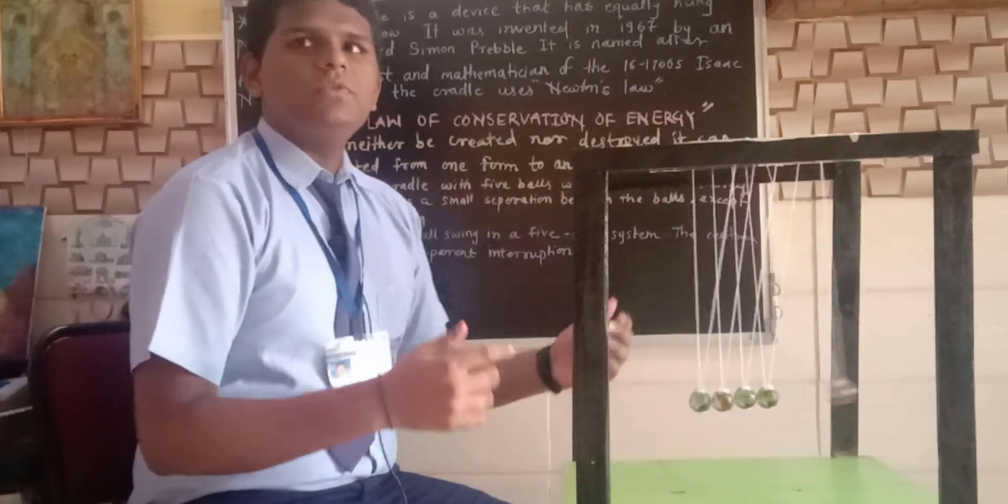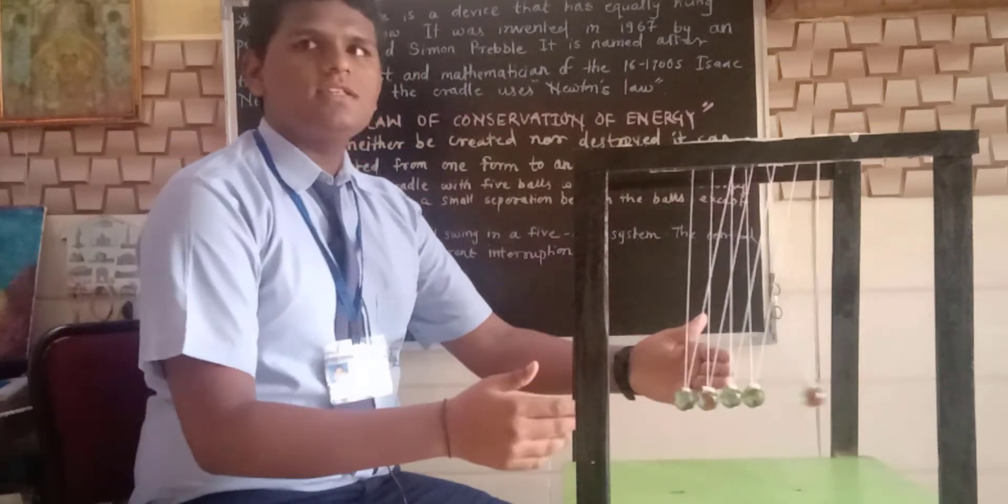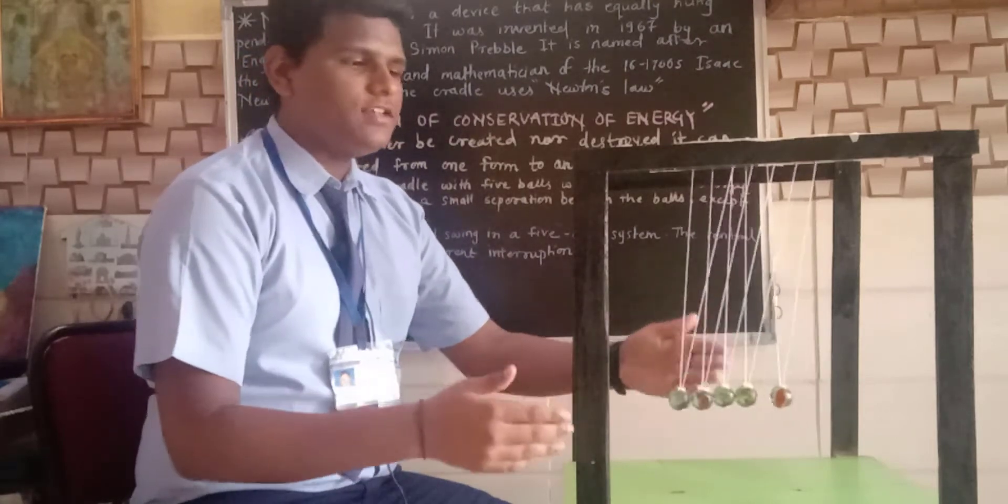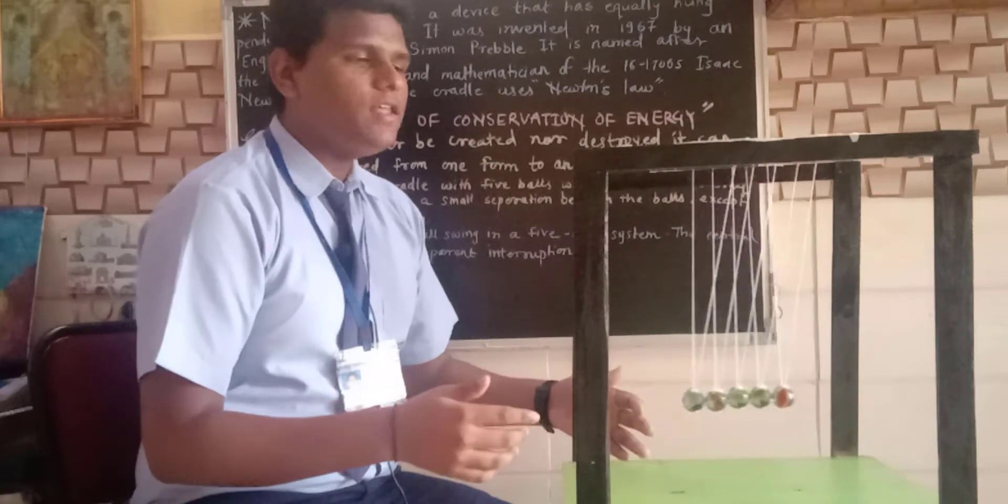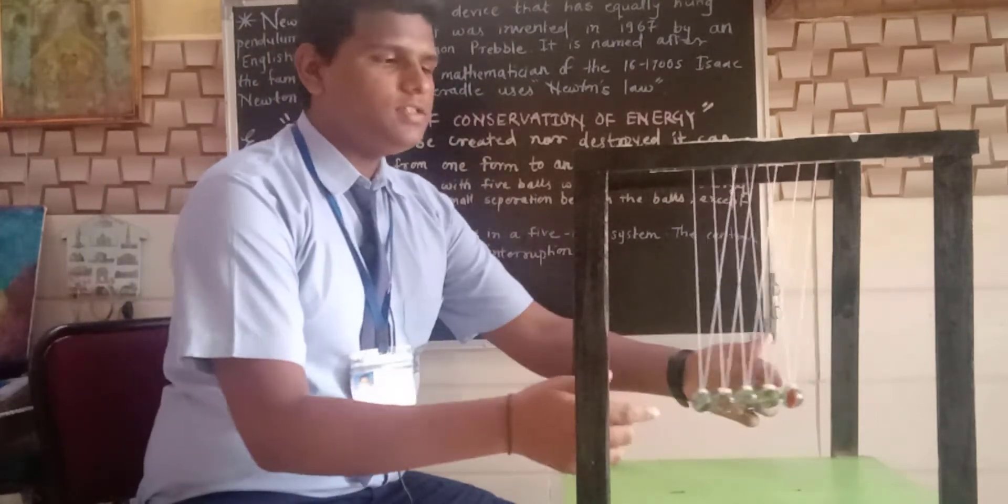An idealized Newton's Cradle with five balls has no energy losses and there is a small separation between the balls except when the pair is colliding.